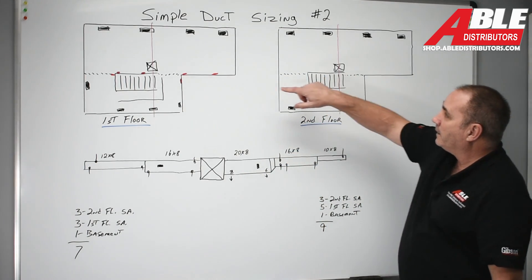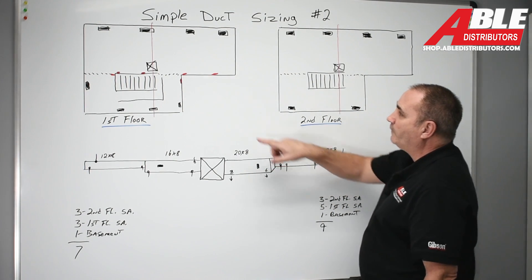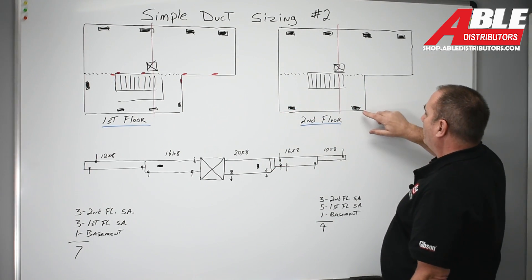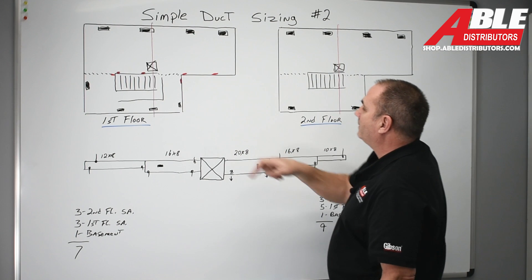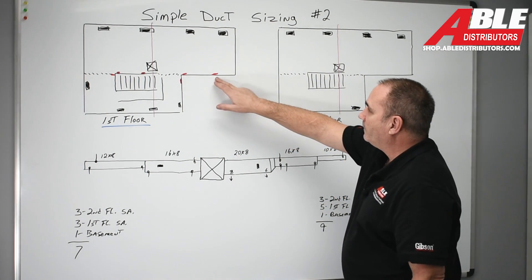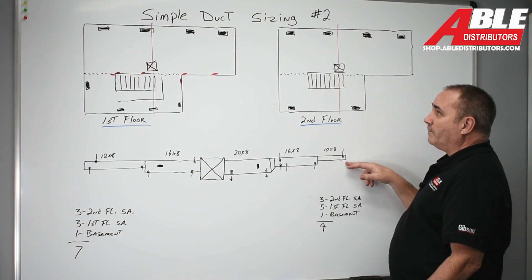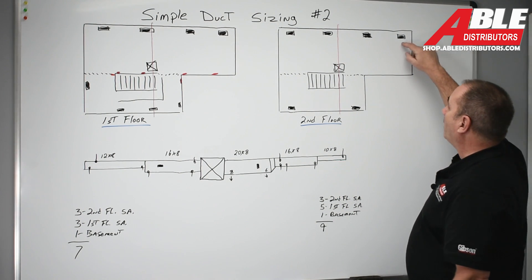I've got one coming back to here. I've got two coming forward. One for this and one for that. I've got another one coming forward for this and then I reduce the last piece of duct to 10 by 8 because essentially all I have is this one.